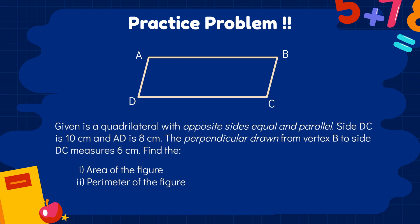Given is a quadrilateral with opposite sides equal and parallel. Side DC is 10 cm and AD is 8 cm. The perpendicular drawn from vertex B to side DC measures 6 cm. We are asked to find the area and perimeter of the figure.